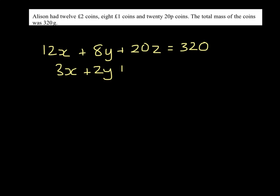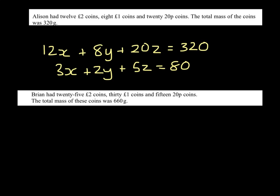So 3x plus 2y plus 5z has to equal 80. Brian has 25 £2 coins, 30 £1 coins, and 15 20p coins, and they weigh 660 grams. This time everything will divide by 5.